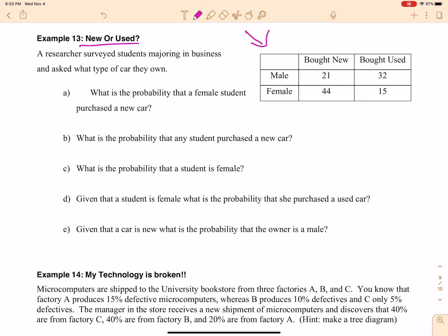What is the probability that a female student purchased a new car? That is where we're starting. All right, so before I start answering the question, I'm going to put my totals out here. So the total males are 53, the total females are 59, total that bought used, that's 47, total that bought new, that's 65. All right, so now I'm going to put my totals here. There's 112 people here.